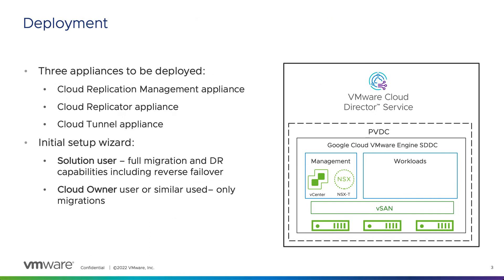You need to download and deploy the three VMware Cloud Director availability appliances through the vCenter UI. It is the same binaries that are used for VMware Cloud Director Private Cloud. After going through all the steps and the deployment is finished, you need to run the initial setup wizard.